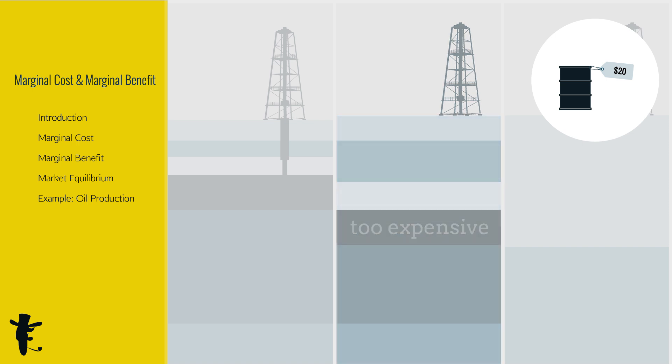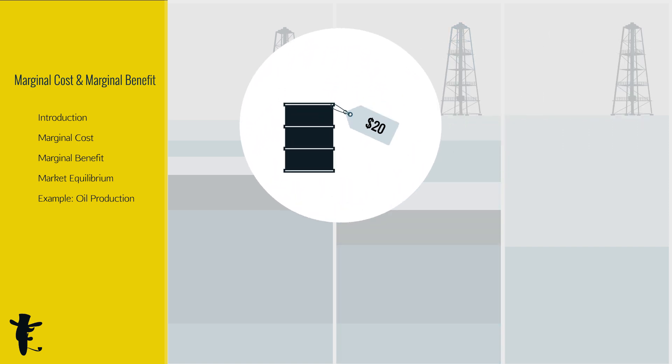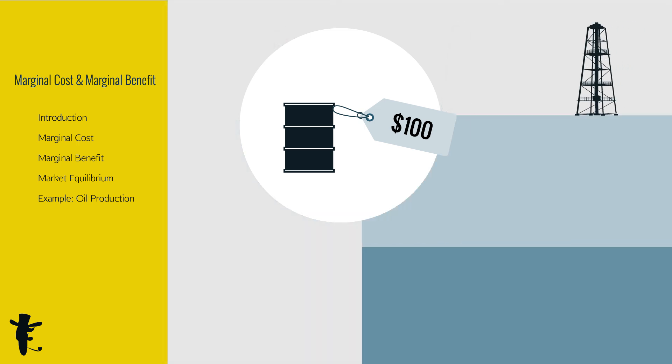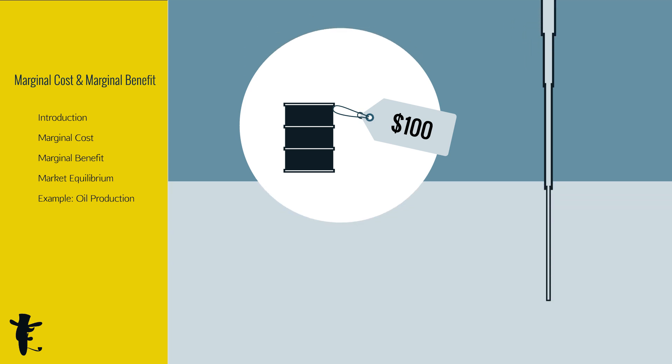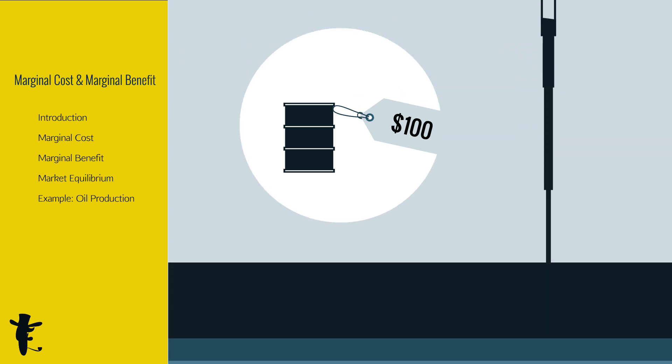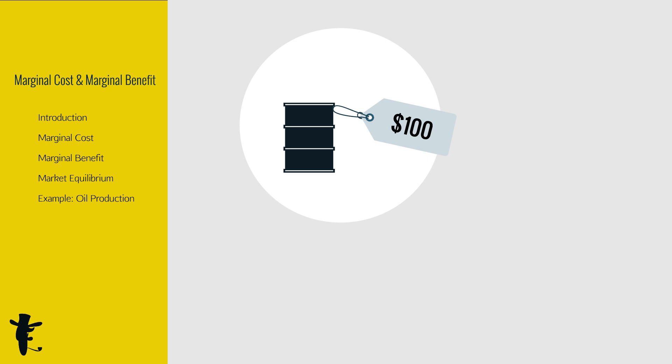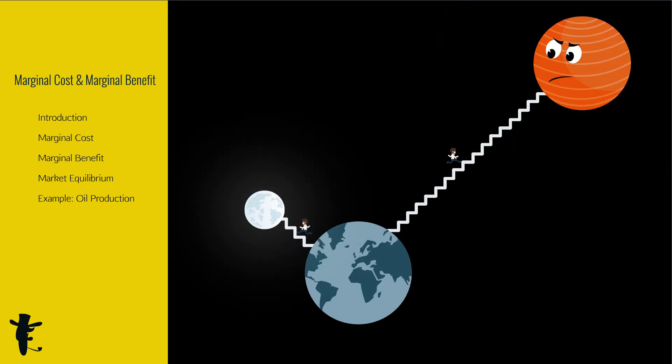If price increases to $100, ha! Drill for more oil! All the way! Until your marginal cost equals to $100. If price of oil increases to $200, wow! Try anything to produce oil! Go to the moon! Go to Mars! Go anywhere to get oil! Because as long as your marginal cost stays below $200, you'll make a profit!